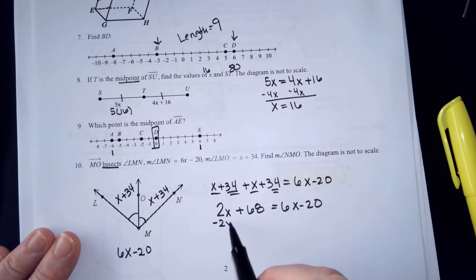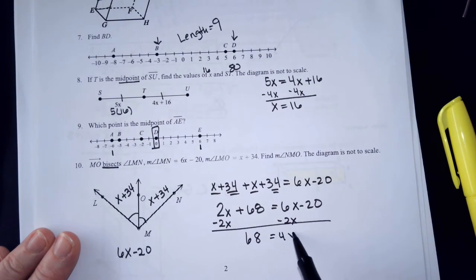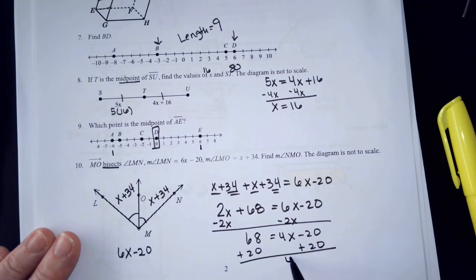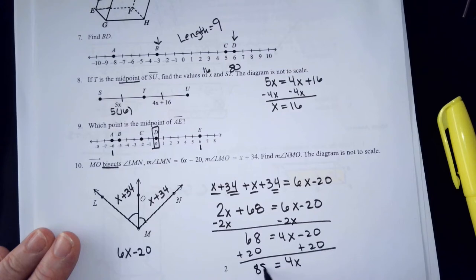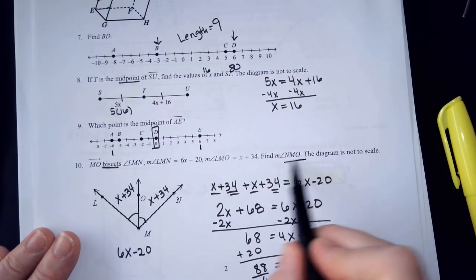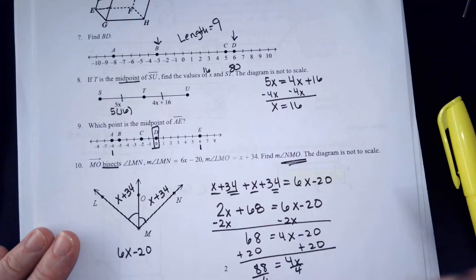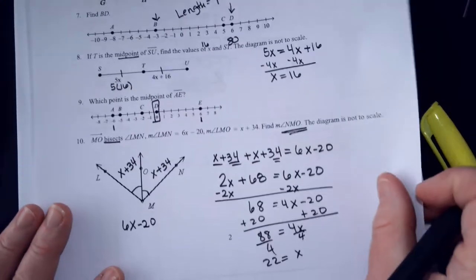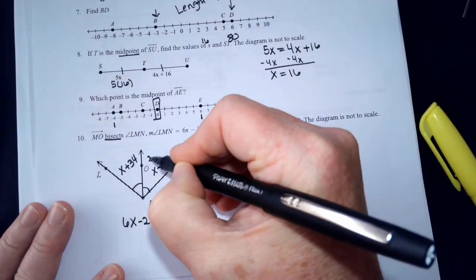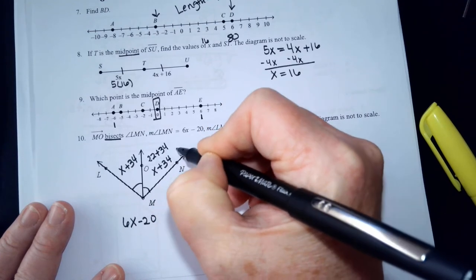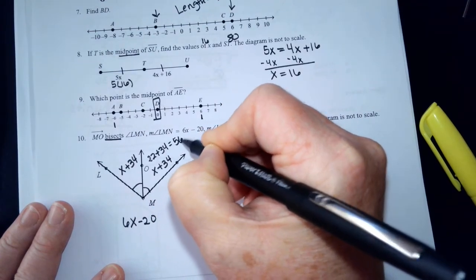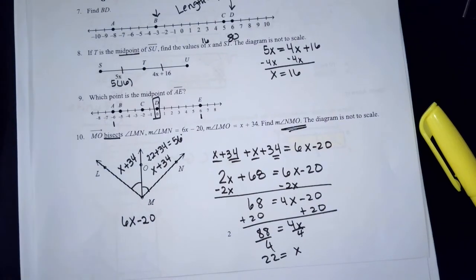Solve. 68 equals 4X minus 20. Add the 20. 4X is 88. What'd you get for X? 22. They want me to find N, M, O. So, I've got to come back over here and go 22 plus 34. And, what is that going to be? 56 degrees. Okay. That's number 10.